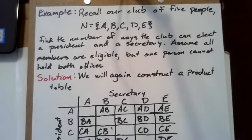In this example, we'll look back at the club of five people we mentioned in the last video. We have N, which is the set {A, B, C, D, E}. We want to find the number of ways the club can elect a president and a secretary. We assume that all members are eligible, but one person cannot hold both roles.